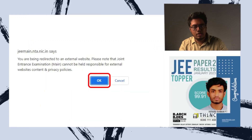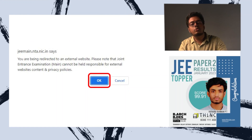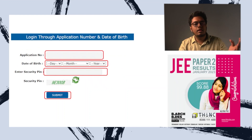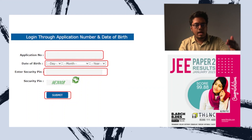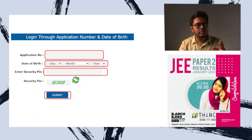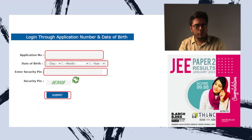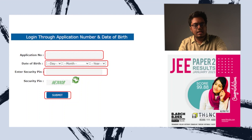When you click on this link, you will be taken to a pop-up window which tells you that you will be taken to an external website. There is nothing to worry — just click OK. After that, you will be taken to fill a form. In this form, you can see application number, date of birth, and security pin. Enter the same details you gave while you registered for the exam. For the security pin, you will see a CAPTCHA pin below it — it will be different each time. Enter that pin shown on your screen and click submit. This is how you download the admit card.